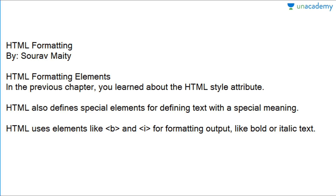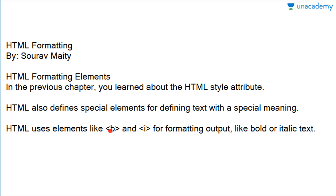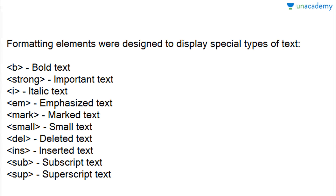HTML also defines special elements for defining text. The text may be bold or italic — bold is defined using the B tag and italic is defined by the I tag. In the coming slides we are going to read about the different tags used for HTML formatting. You can apply this in your browser or use this in your notepad and run it over a browser, so you can see the difference between the various tags.